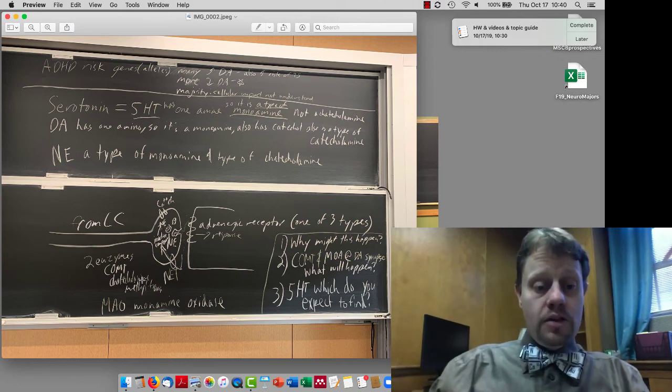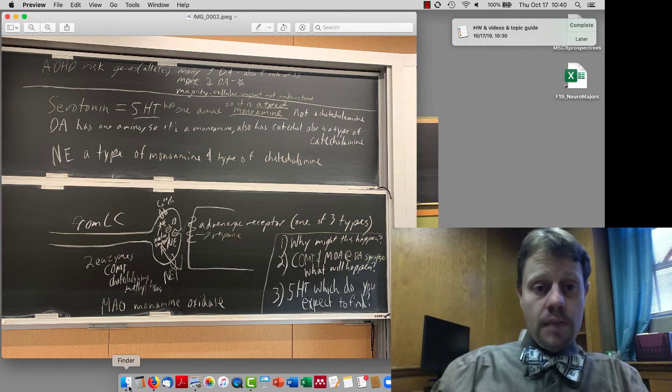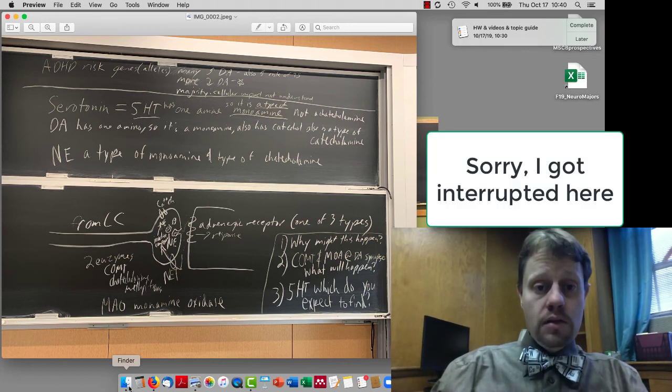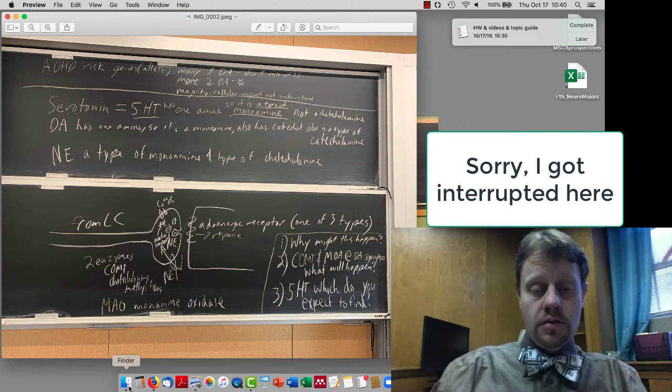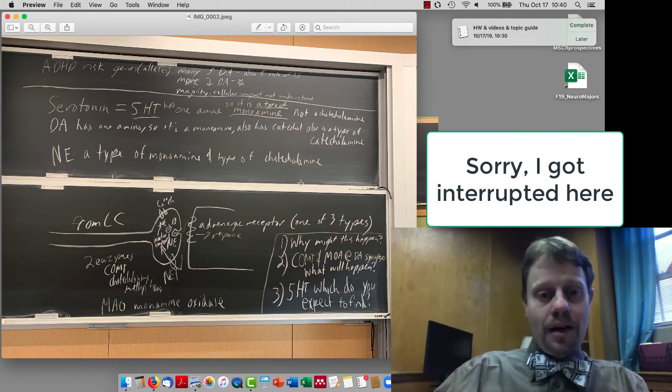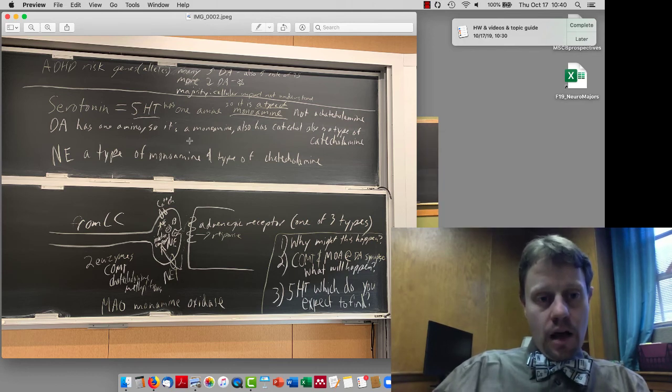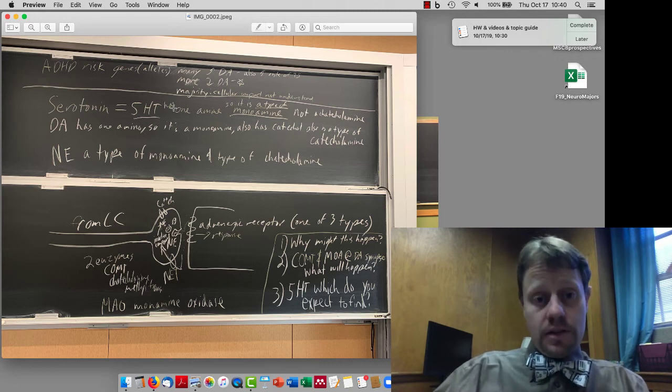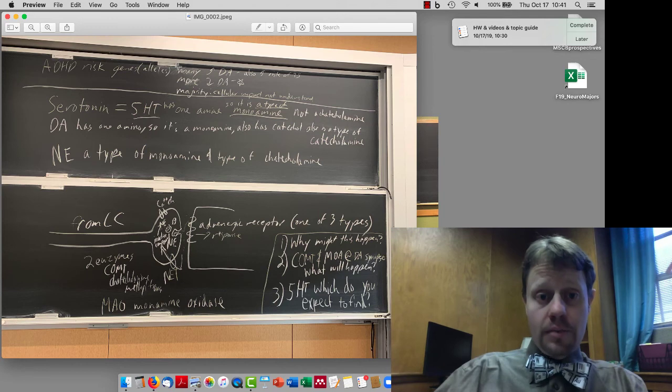In terms of ADHD risk alleles, we talked about both on Tuesday and today that some ADHD risk alleles are involved with decreasing dopamine, and then even more, we don't know what they do. But a small number increase dopamine, and that's a little bit confusing.